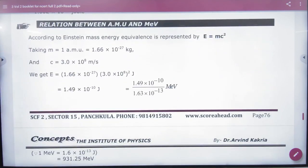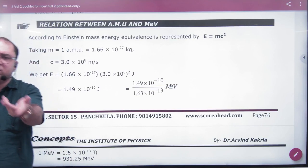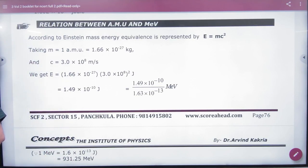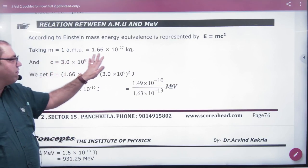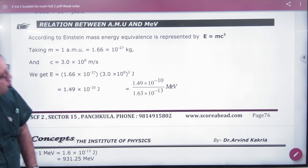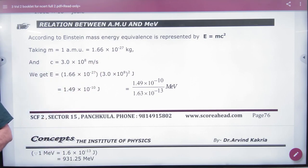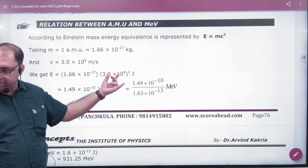The relation between amu and mega electron volt we can prove in two ways. amu means 1.66 into 10 to power minus 27 kg. This is one amu mass. To find its equivalent energy, we apply the formula E is equal to mc square.